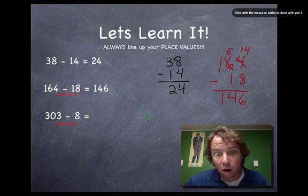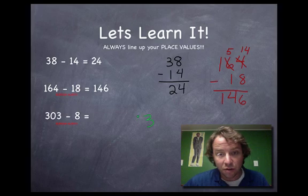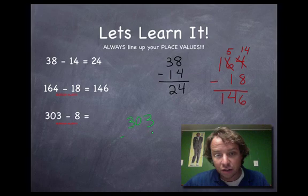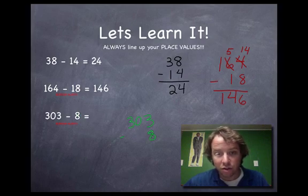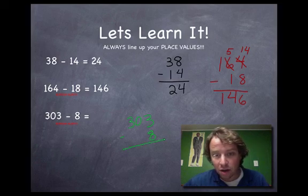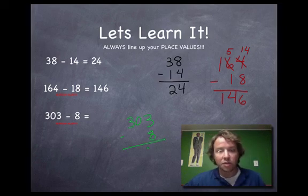One more problem — the trickiest one. I'm writing the ones place first, then tens, then hundreds, making sure ones places are lined up. The 8 is in the ones place underneath the 3 that's in the ones place of 303. So what's 3 minus 8?